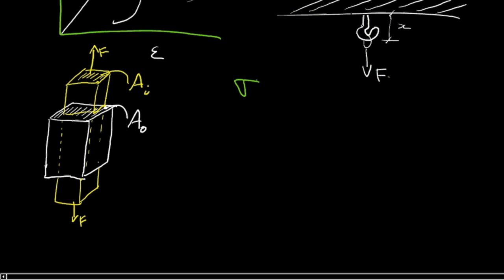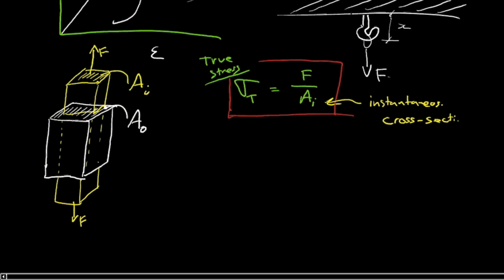So first thing we could do is say, all right, that means that this material itself is actually experiencing a force over a smaller area. So we could define the true stress as the force over that actual cross-sectional area. This is the true stress. This is the stress that the material itself is actually feeling. And that subscript i is telling us this is the instantaneous cross-sectional area.